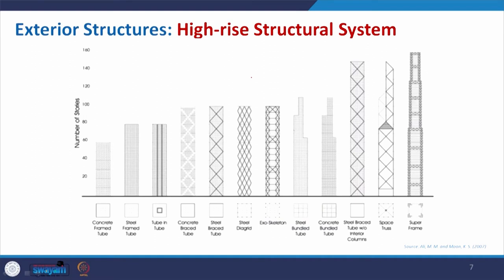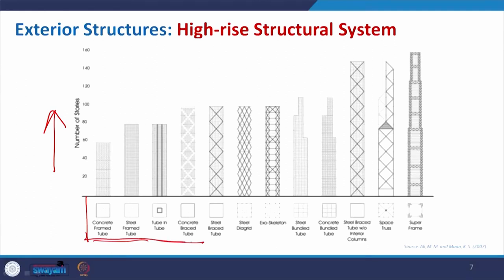Here is a schematic diagram showing the number of stories achievable with different structural systems for high rise buildings. Frame structures — which can be made of concrete or steel — represent one category. Moving up in capability, we arrive at tube structures. Normal frame structures are something we have seen in the interior structure discussion, but the first new category here is the tube structure — and we will get into what exactly that is.